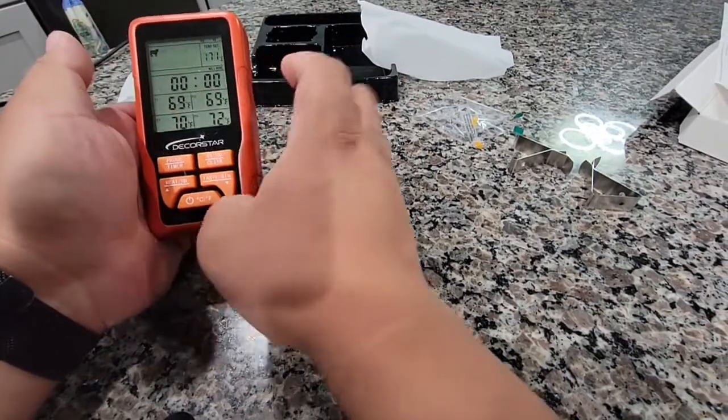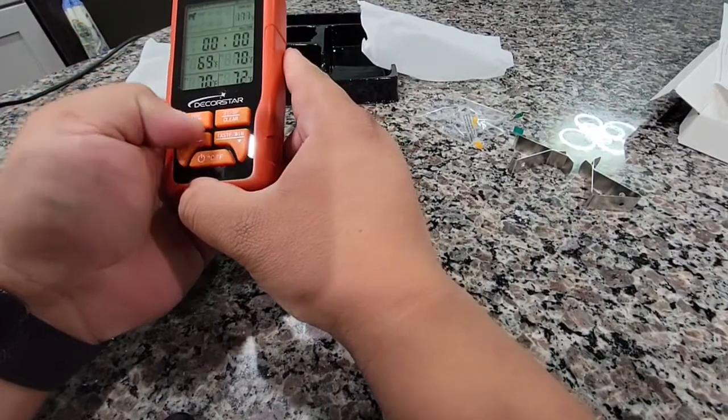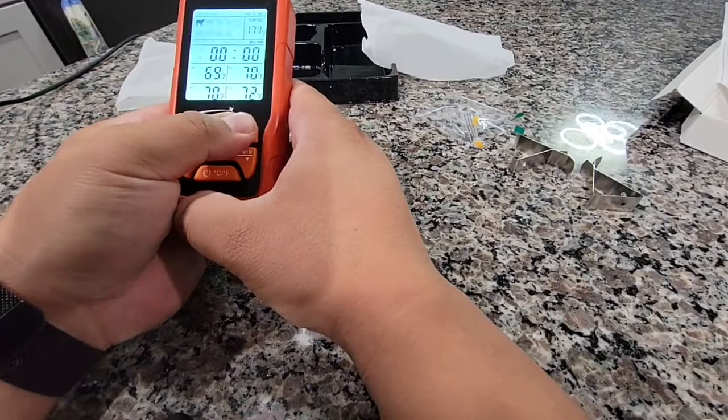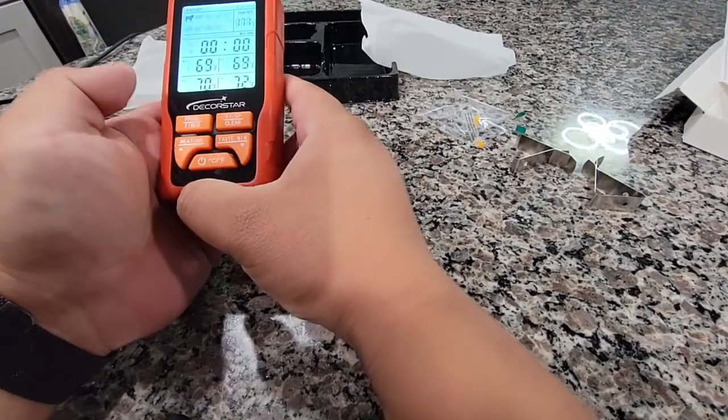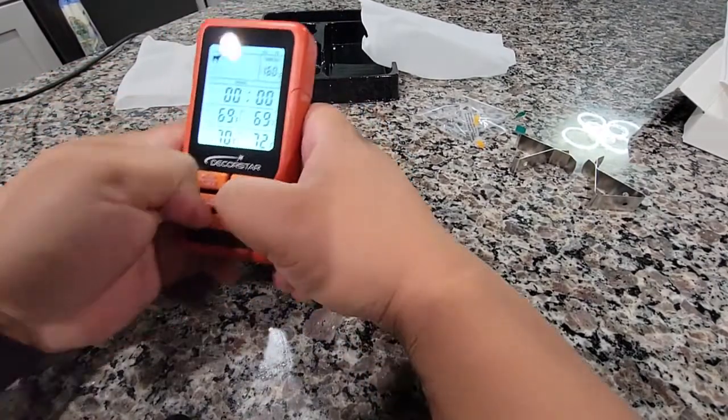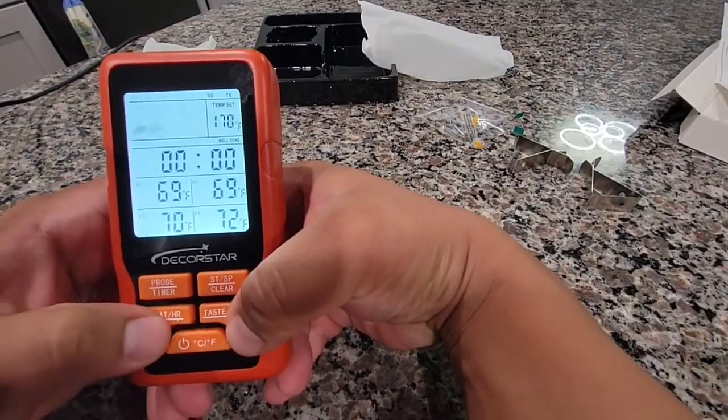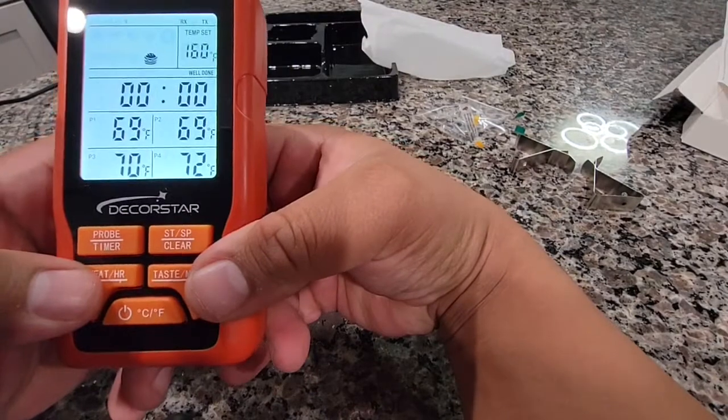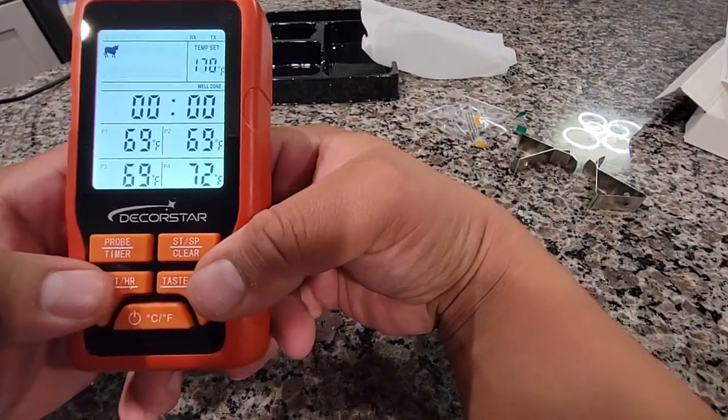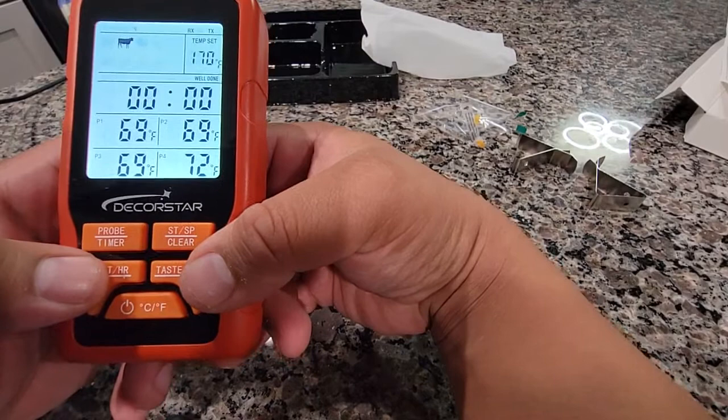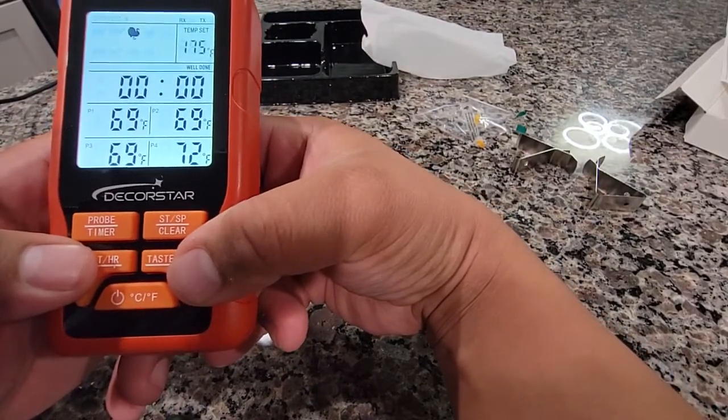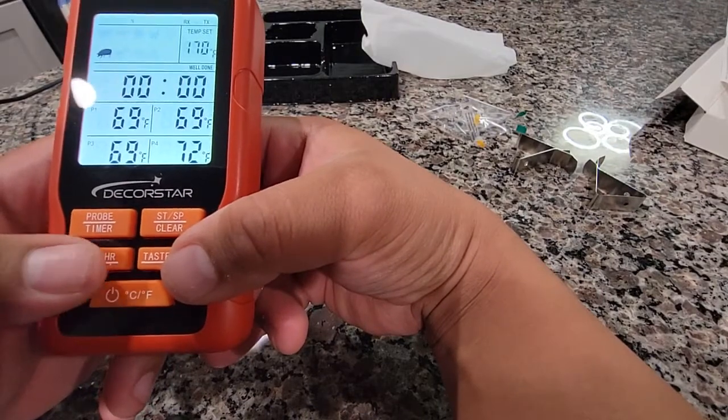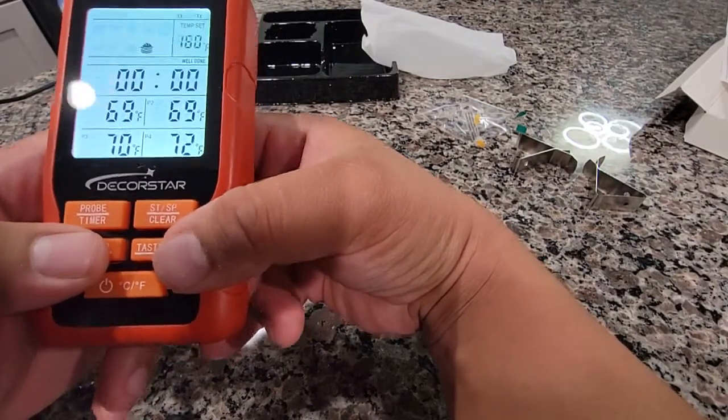So once it hits that, it'll tell you. You can time the probe. Clear your settings over here. Change how much you want it to. So fish, a burger, settings, cow, other type of cow, turkey, chicken, pig, sheep, and fish again.